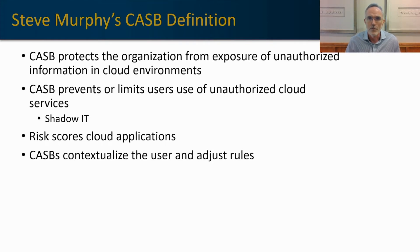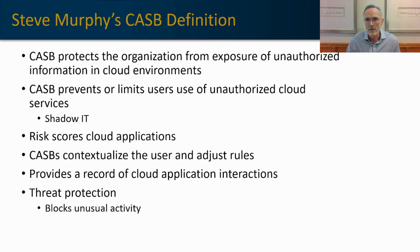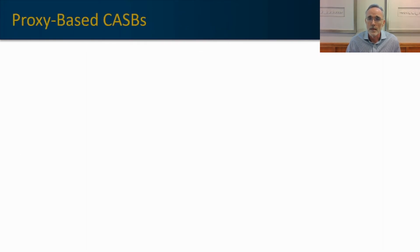Once the CASB recognizes the user is back at their normal IP address, those rules may be relaxed. It also provides, for compliance purposes, a record of cloud interactions, helping you understand who's accessing what data and for what purposes. There's also a threat protection element to ensure only appropriate users are using cloud services and to detect unusual activity. A CASB has a user and entity behavior analytics component that allows you to block unusual activity.